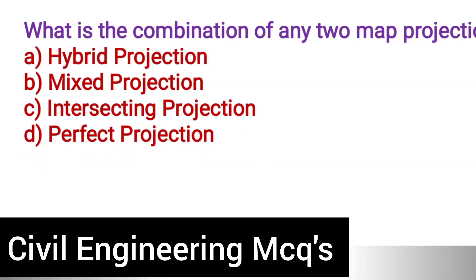Next question: What is the combination of any two map projections called? Option A: Hybrid projection. Option B: Mixed projection. Option C: Intersecting projection. Option D: Perfect projection. The correct answer is option A, hybrid projection.